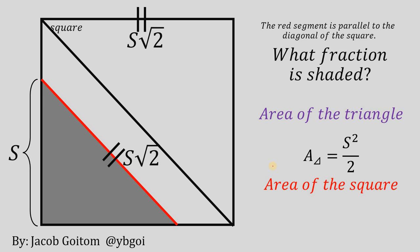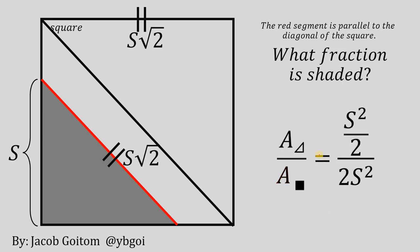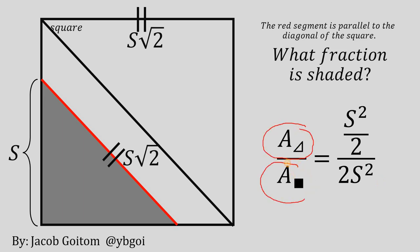Now, for the area of the square: the area equals the side length raised to the power of 2. So the area of the square equals S times the square root of 2, raised to the power of 2, which simplifies to 2S squared. We are now ready to answer the question — the shaded fraction is the ratio of the area of the triangle to the area of the square: S squared over 2, all over 2S squared.